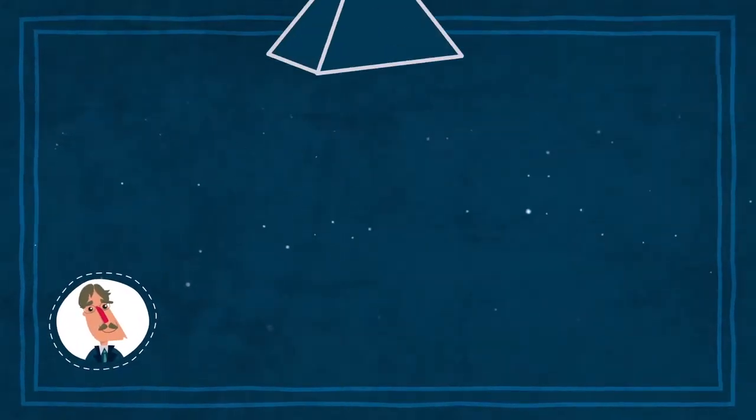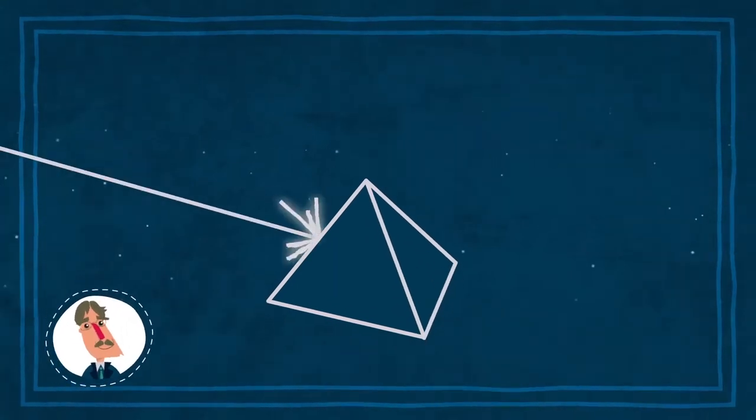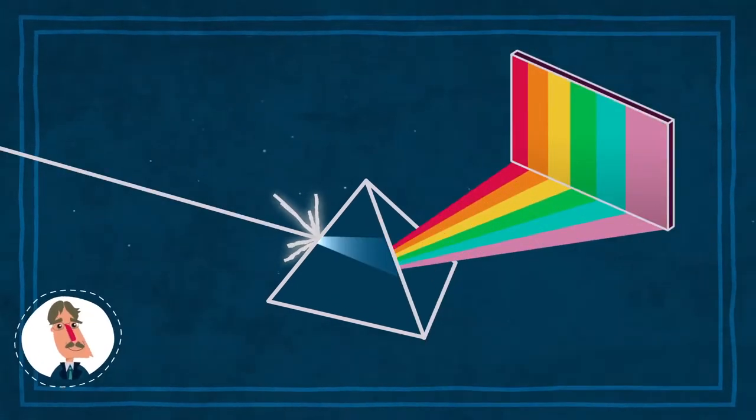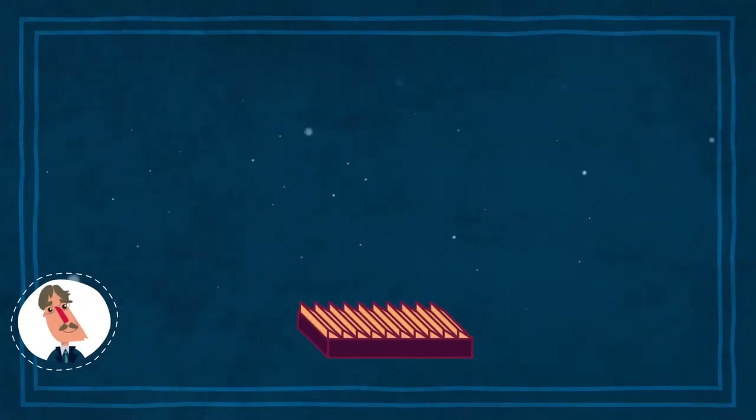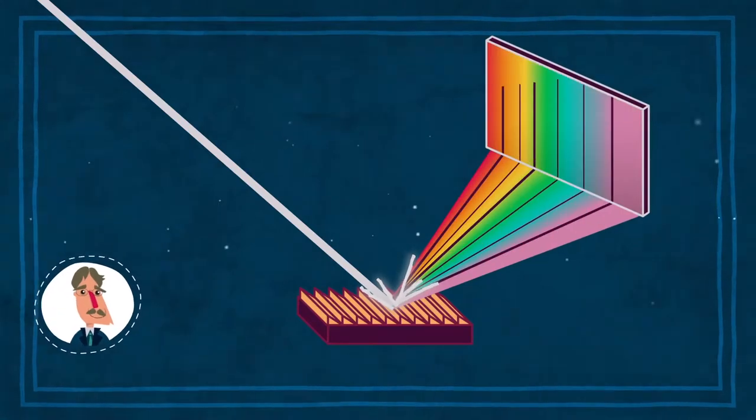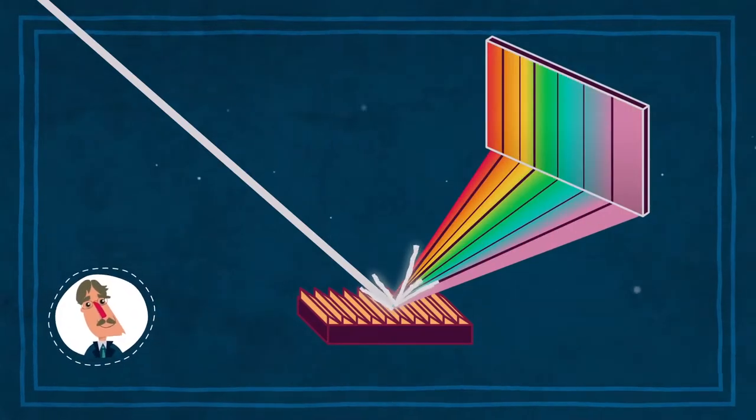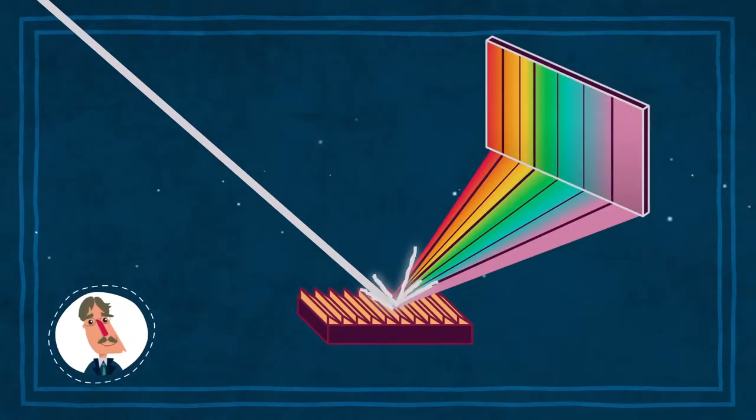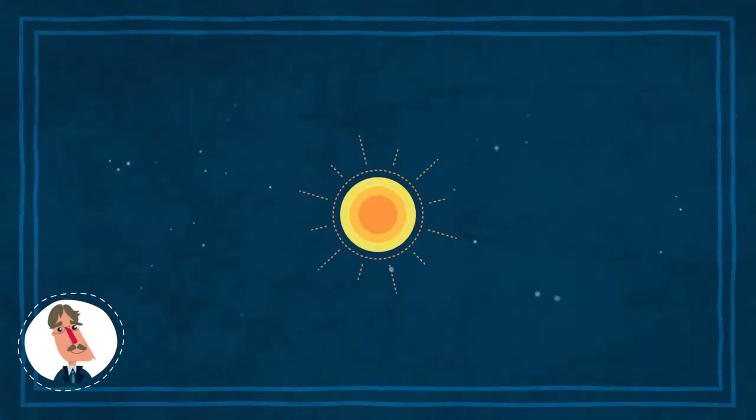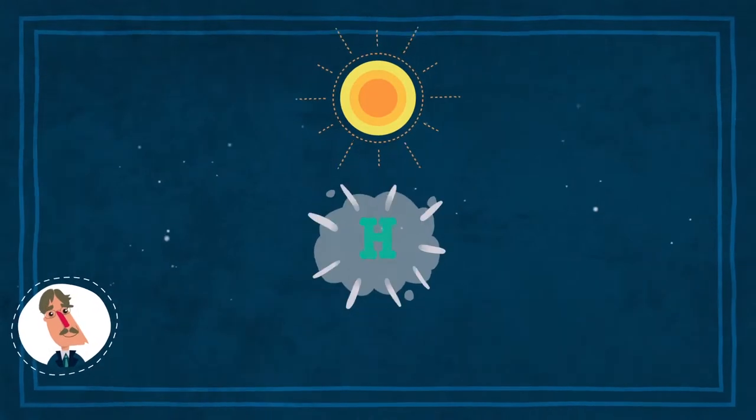Nel XVII secolo il fisico britannico Isaac Newton mostrò che la luce bianca passando attraverso un prisma di vetro si scomponeva nei diversi colori dell'arcobaleno. Se al posto del prisma usiamo un dispositivo migliore per scomporre la luce, possiamo vedere delle bande nere tra i colori. Queste sono le righe spettrali. Studiando le righe spettrali emesse dai corpi celesti, possiamo scoprire molte cose su di essi.